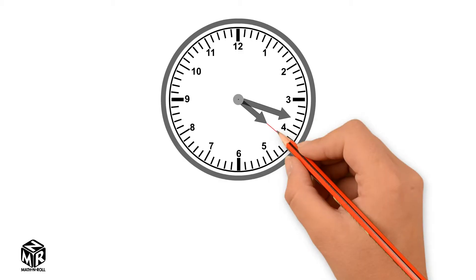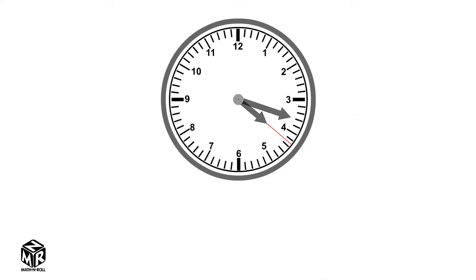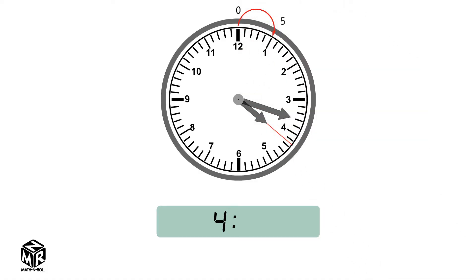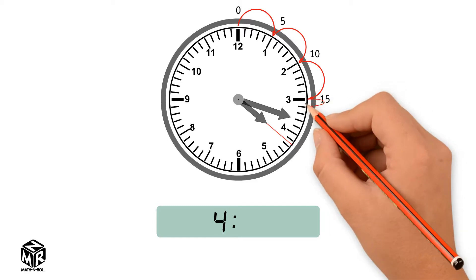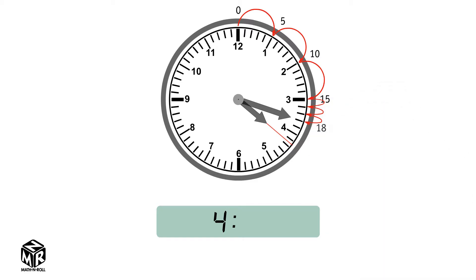Where is the hour hand pointing? The hour hand points right after 4, so the hour is 4. Now let's check where the minute hand is pointing. It points after the 3. It takes one minute for the minute hand to move from one mark to the other on a clock. To move from one number to the next it takes 5 minutes, so let's count by 5s. The minute hand points to 18, so the time is 4:18, or 18 minutes after 4.